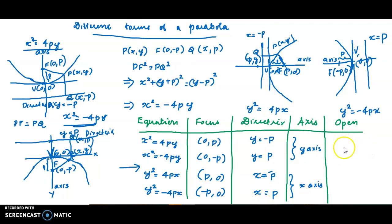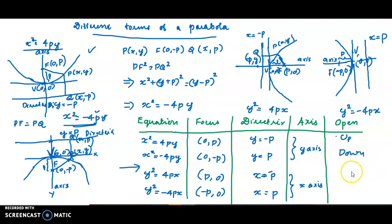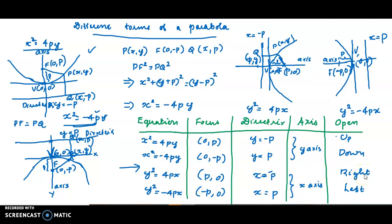x² = 4py opens upward. x² = -4py opens downward. y² = 4px opens to the right. y² = -4px opens to the left. These are the comparisons between the equations: focus, directrix, axis, and the openness of the parabola.